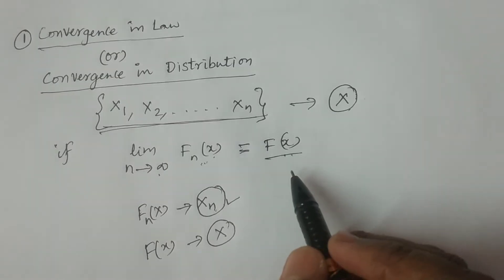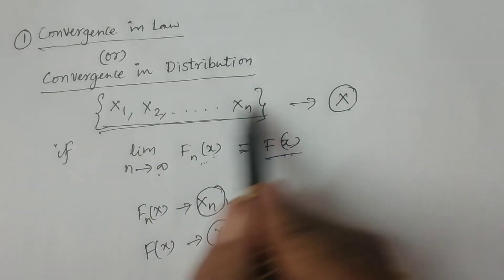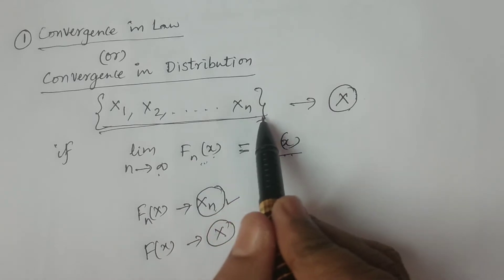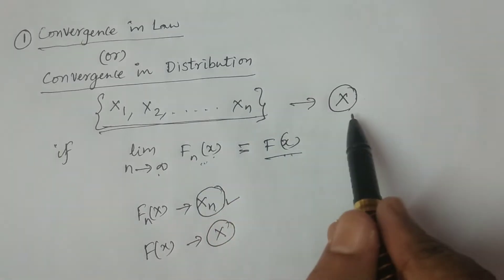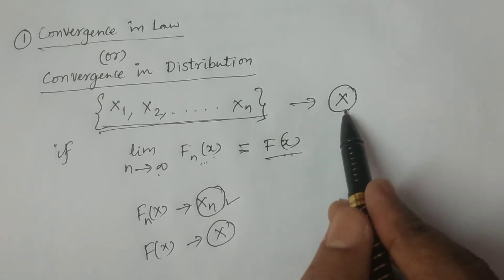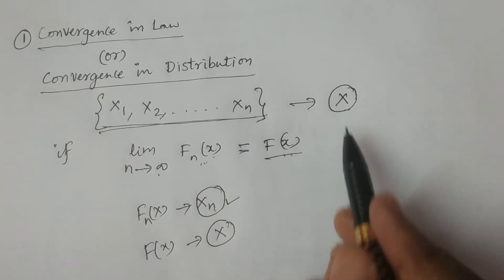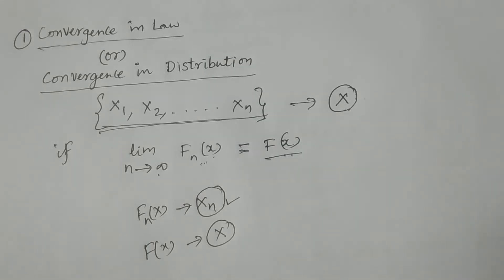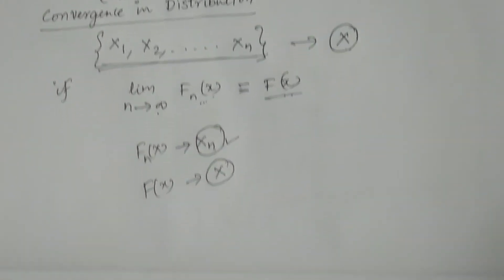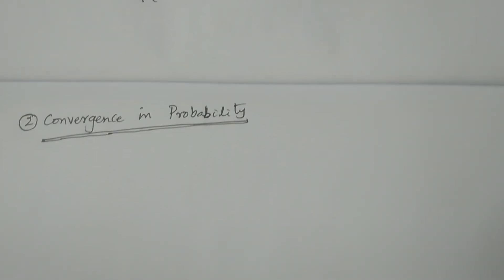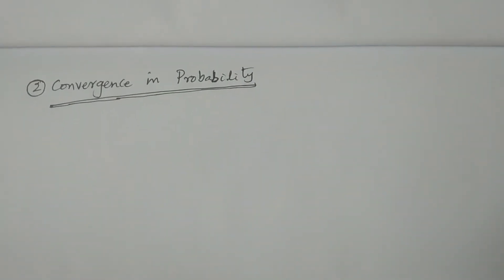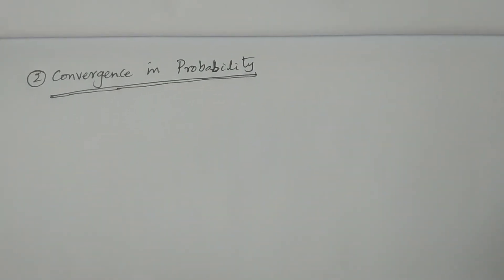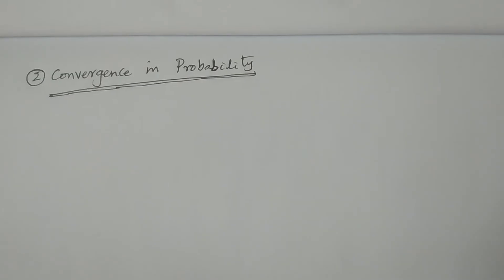Then we say the sequence of random variables x1, x2, and so on xn converges in law or convergence in distribution to the random variable X. This is the definition of convergence in law or convergence in distribution. Now I will tell you one more important definition: convergence in probability.